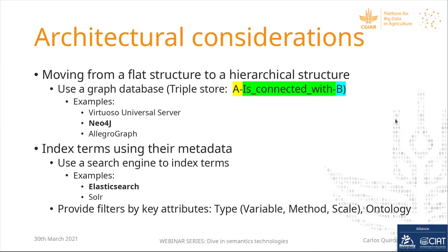We added attributes such as whether a specific entity is a variable, a method, or a scale, and which ontology it belongs to. This gives users the ability to search for, say, 'maize yield as a variable,' or 'maize yield as a method,' or 'maize yield as a scale.' This entry point makes it very easy for a normal user to narrow down to just a few terms and make a more informed decision on which term to use.